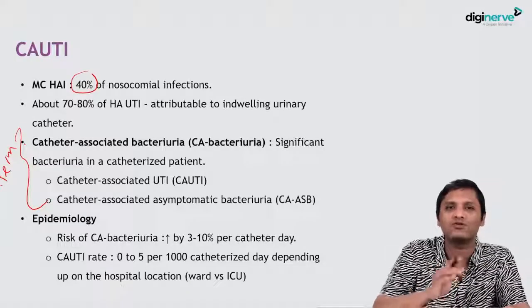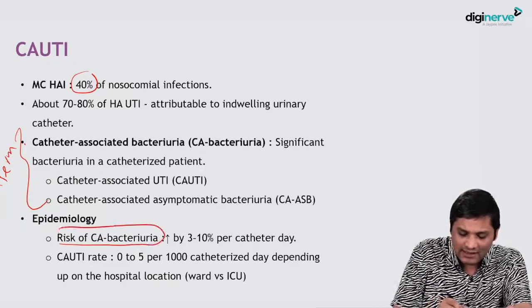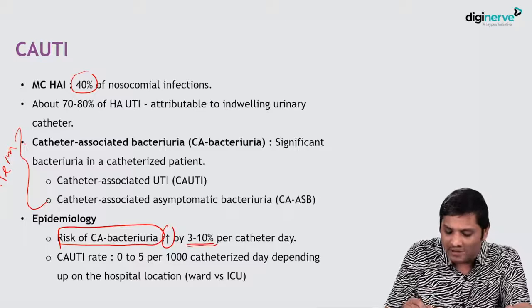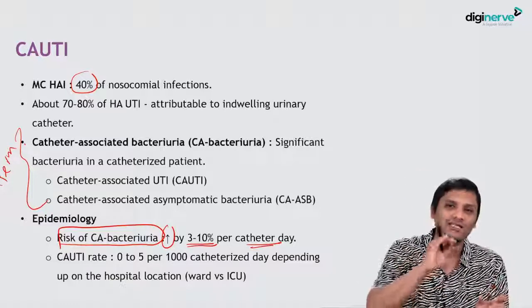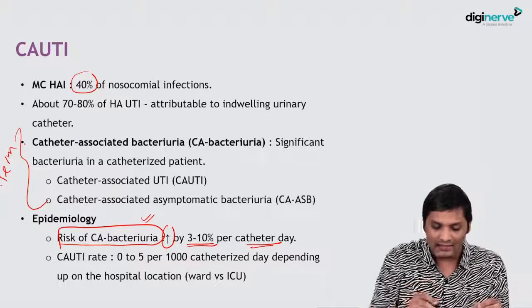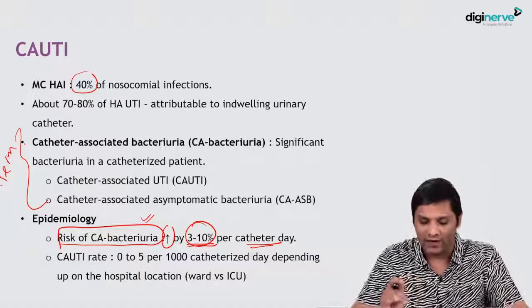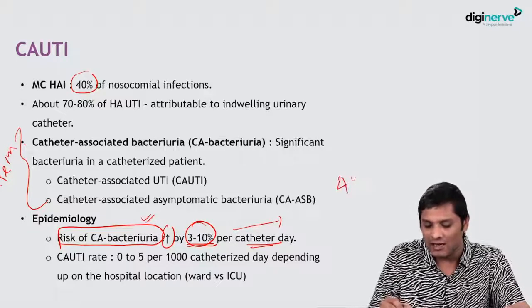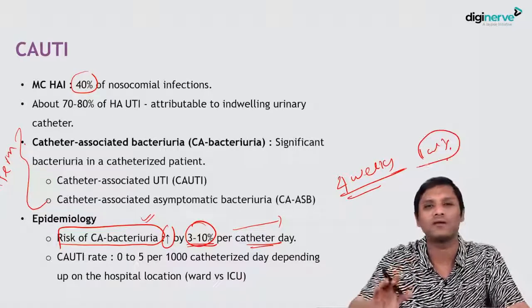Now we will discuss how common CAUTI is — the epidemiology. It is the most common nosocomial infection. The risk of CABacteria increases by 3 to 10 percent per catheter day. The presence of a catheter is the single most important risk factor. If the catheter is present, the risk of CABacteria — with or without symptoms — is at least 3 to 10 percent per every day of catheterization. That means within about 4 weeks, 100 percent of catheterized patients may develop CABacteria.